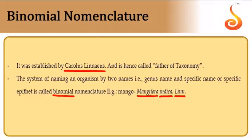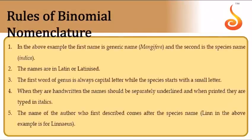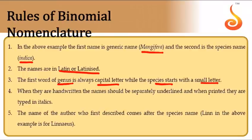The rules of binomial nomenclature: you give two names — the generic name and the specific name. Both names need to be latinized. The genus name must start with a capital letter and the species name with a small letter. If handwritten, it should be underlined; if printed, it should be in italics. The author's name in abbreviated form must be affixed to the scientific name. Together, the genus name, specific name, and author's abbreviated name form the binomial epithet.